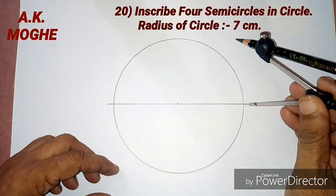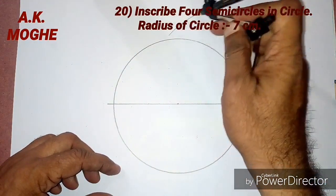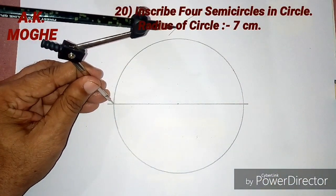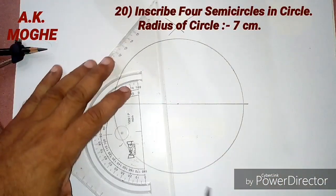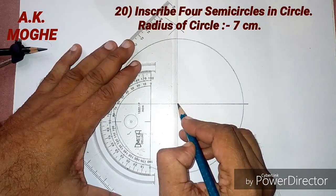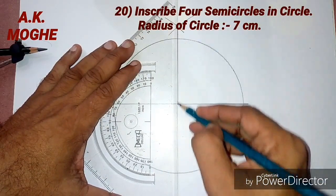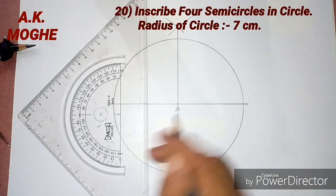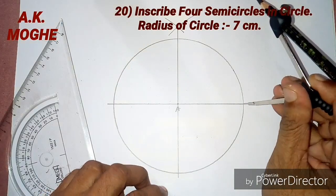We are going to make 4 equal parts of that circle initially. To do so we need to bisect the diameter of the circle into 2 equal parts. So here we are getting 4 equal parts of the circle.